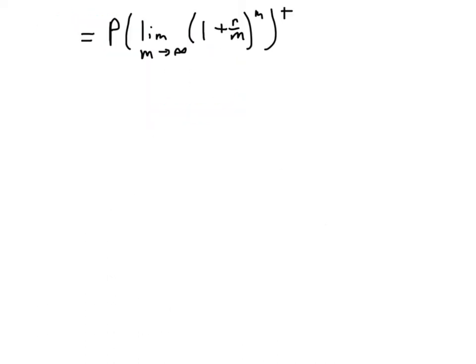So I've just rewritten the formula here on a clean screen so that we can continue our discussion. What I'm going to do now is a little trick from calculus. I'm going to do a u substitution where u equals m over r. And you can see another way to write that is m equals u times r. Notice that as u goes to infinity, so does m.